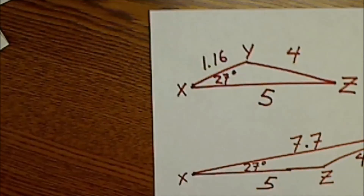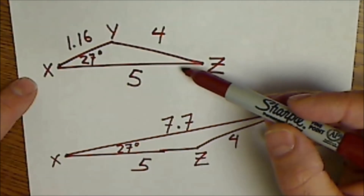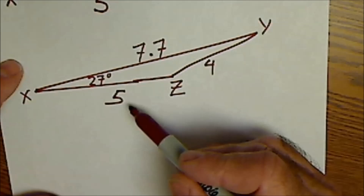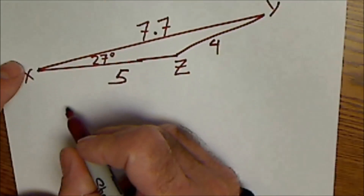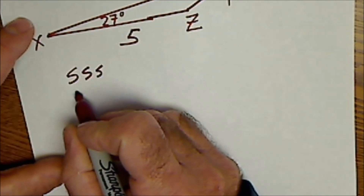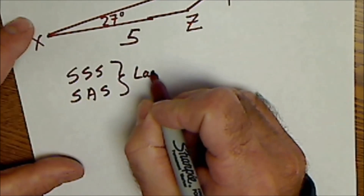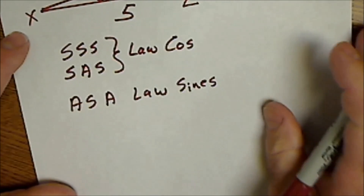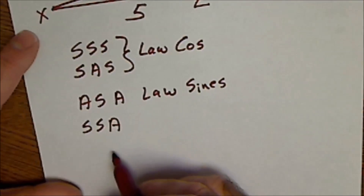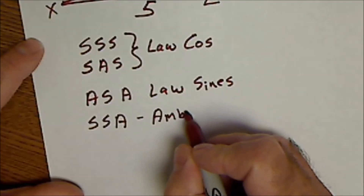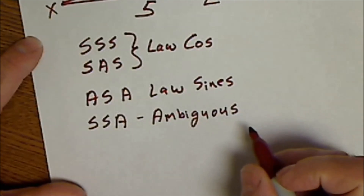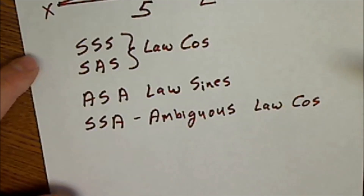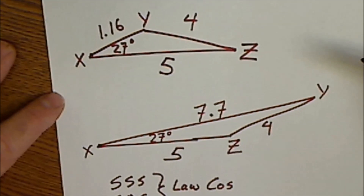Those solutions create two possible triangles: one with sides 4, 5, and a shorter length of 1.16 with an angle of 27, or a second triangle with sides 4, 5, and 7.7. So to recap — three ways to prove triangles congruent: side-side-side and side-angle-side both use the law of cosines; angle-side-angle uses the law of sines. And there's a fourth case, the side-side-angle triangle, which is the ambiguous case. There will be possibly zero, one, or two solutions. Use the law of cosines, put the equation in quadratic form, plug values into the quadratic formula, and take those solutions to create two possible triangles.